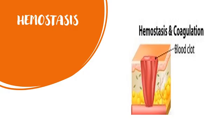Hemostasis is the body's attempt to quickly stop the bleeding without interrupting the blood flow. Although all injuries are different and unique, the healing process varies on a number of factors, which include the depth, the size, the type, as well as the location of the wound. It also includes the presence and duration of infection, as well as the health and age of the person who's been injured.